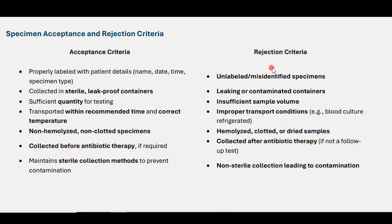Rejection criteria: unlabeled or misidentified specimens must be rejected, as they create misconceptions. Leaking or contaminated containers are a source of infection to others and lab personnel. Insufficient sample volume, improper transport conditions (e.g., blood culture refrigerated), hemolyzed, clotted, or dried samples are all grounds for rejection. Samples collected after antibiotic therapy (if not a follow-up test) give wrong results, as does non-sterile collection leading to contamination.